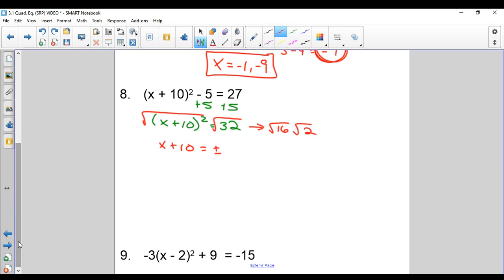4 is a factor, but 16 is the biggest factor. So it's plus or minus 4 radical 2. Like we saw on the last slide, we have actually a little bit less work if we have a radical left over. So this is our answer. Subtract 10 from both sides. We get negative 10 plus or minus 4 radical 2.